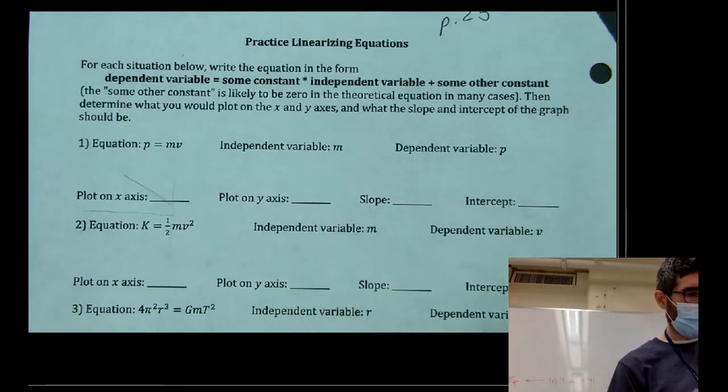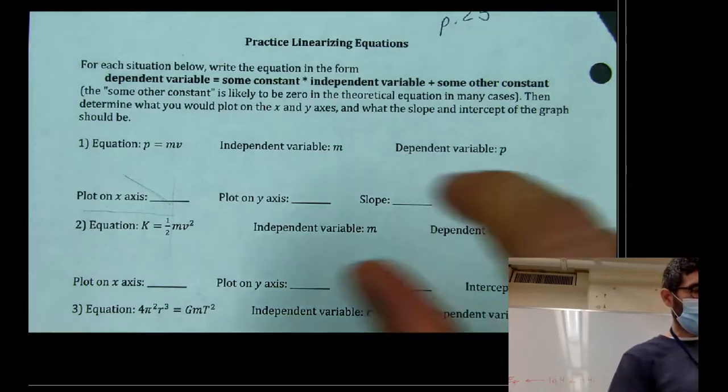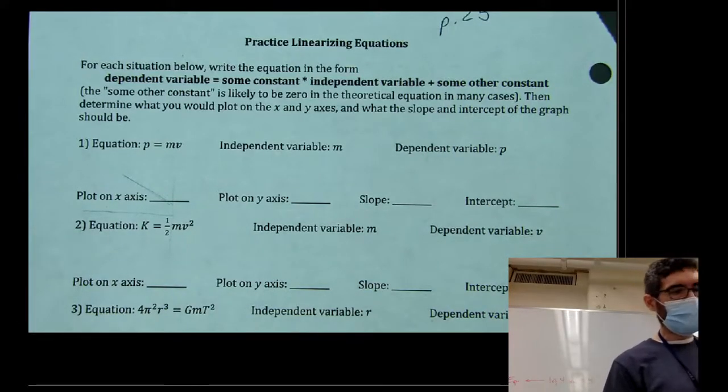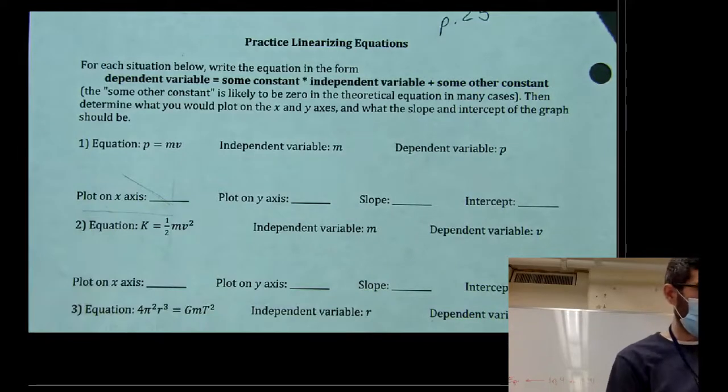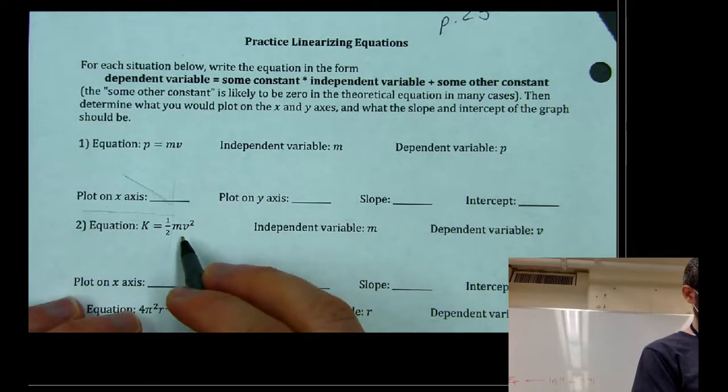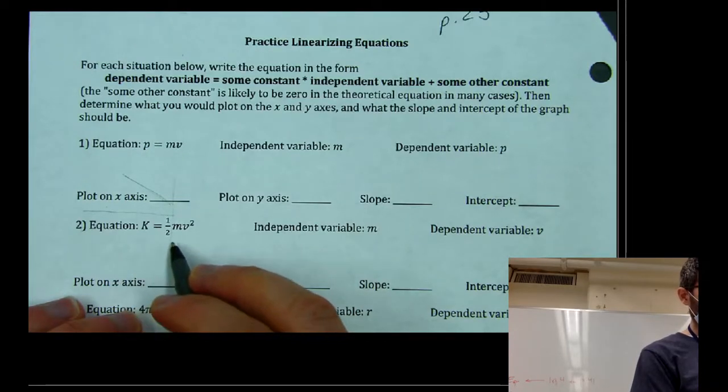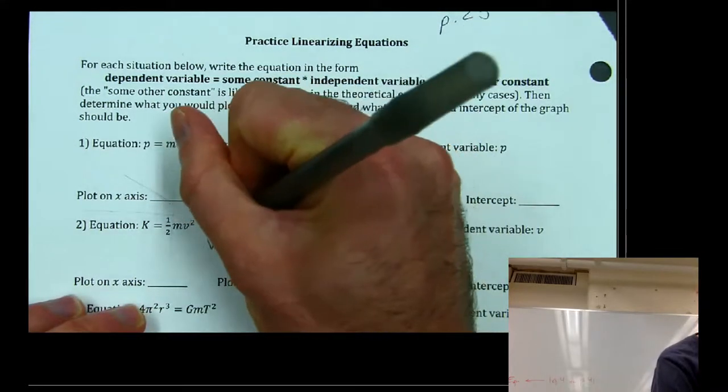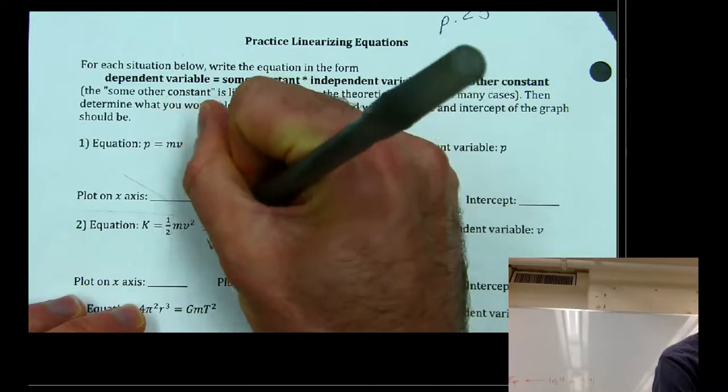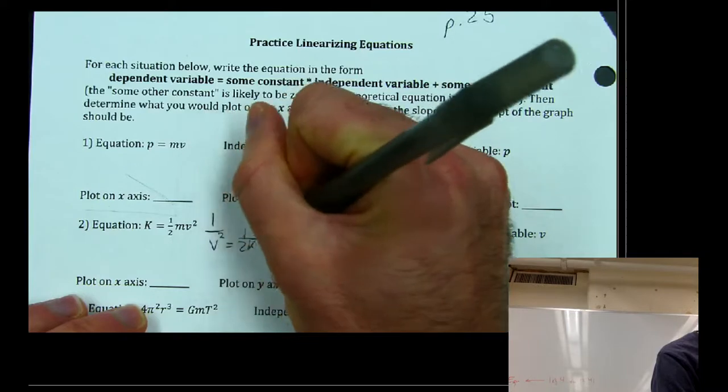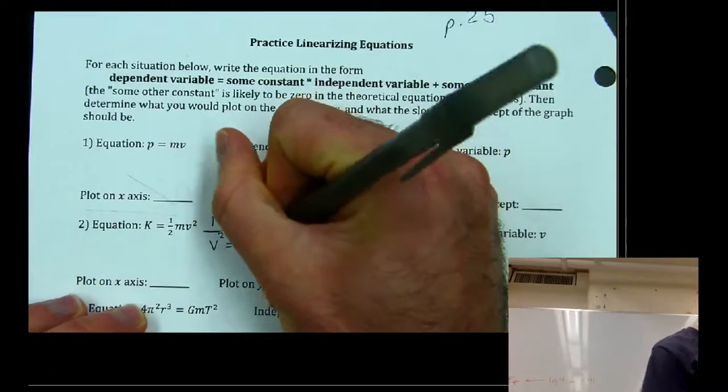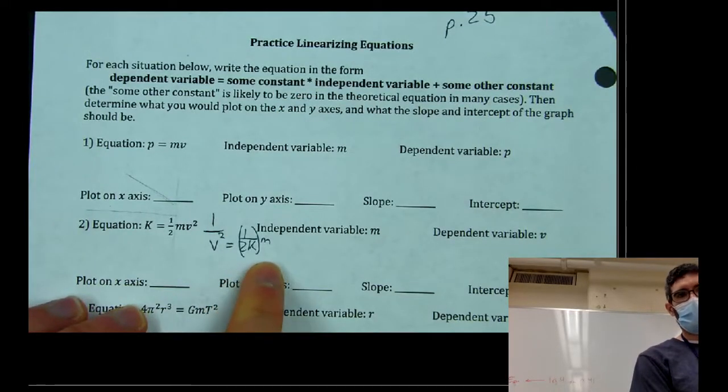So what we want to do is we want to make sure our independent variable is on the right side multiplied by a constant. Our dependent variable is isolated on the left side with no multiplier. But after that, it's kind of up to you how you want to arrange it. So the variables can be inversed or squared or something like that. They just can't be together on the same side of the equation and the dependent variable can't have any constant multipliers. So one way we could rearrange this is you could divide out V squared to the other side and then bring the K back to the right side and have something like this. 1 over V squared is equal to 1 over 2K times M.